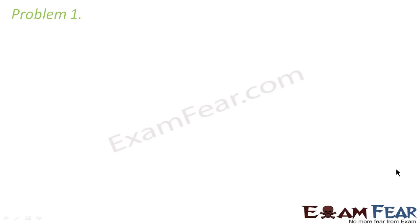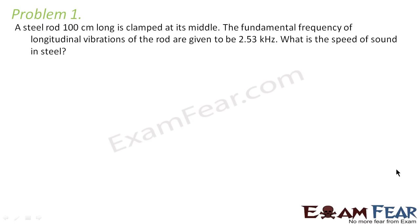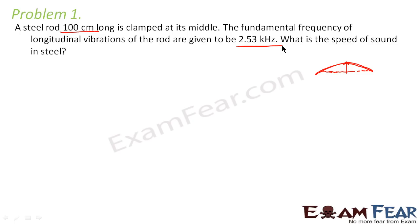Now let us look at certain problems related to nodes and antinodes. The first problem says: a steel rod 100 cm long is clamped at its middle. The fundamental frequency of longitudinal vibrations of the rod is given to be 2.53 kilohertz. What is the speed of sound in steel? The length of the rod is 100 cm, that is equal to 1 meter.